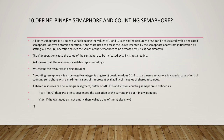P(X) means the submission of a request — asking whether an operation can be performed on a particular critical section or resource. V(X) means the return of permission after a process has finished using a copy of the resource. I hope I answered this question on both binary semaphore and counting semaphore.